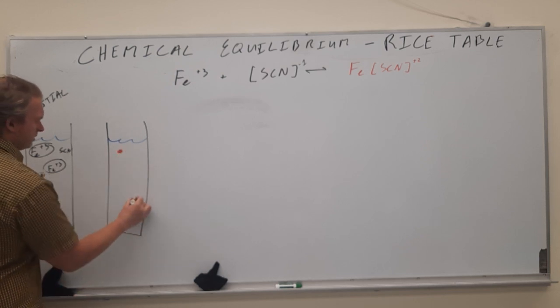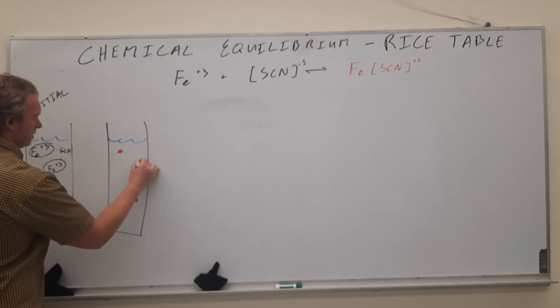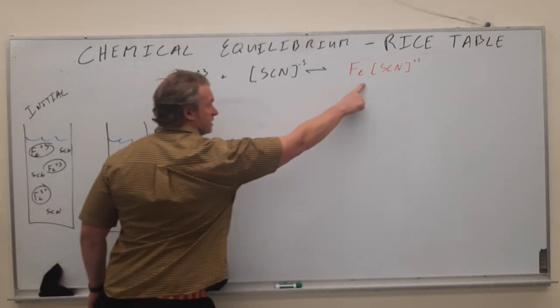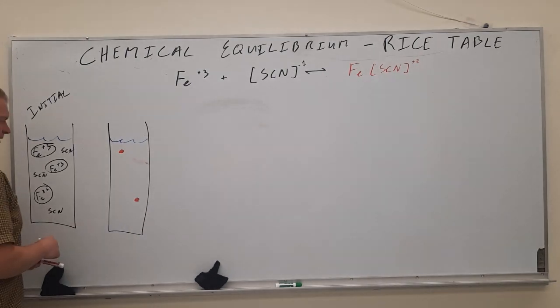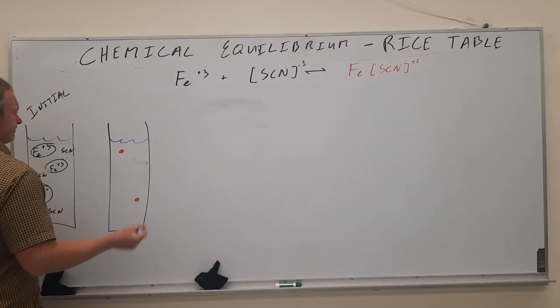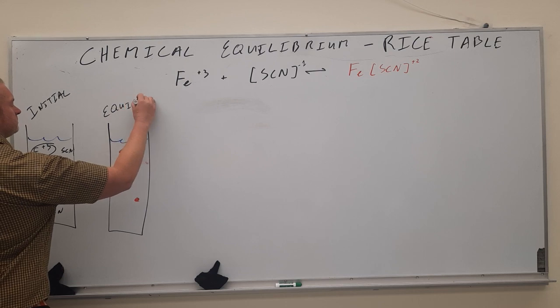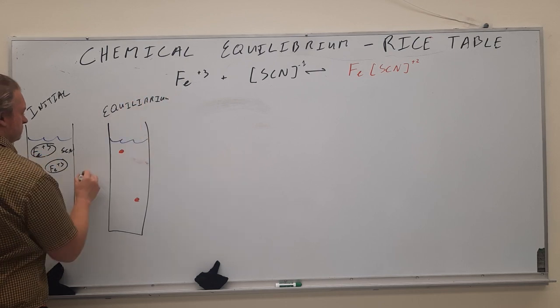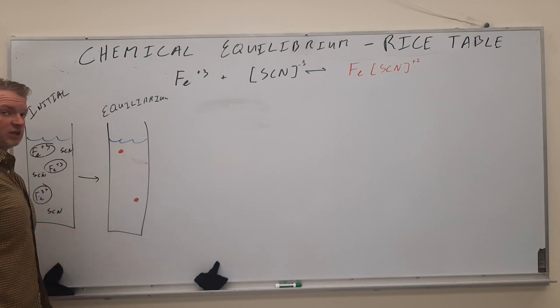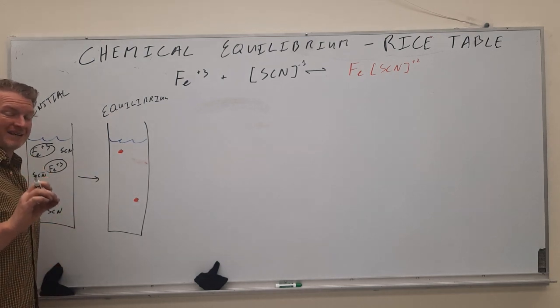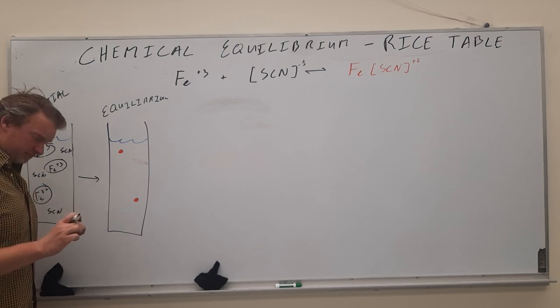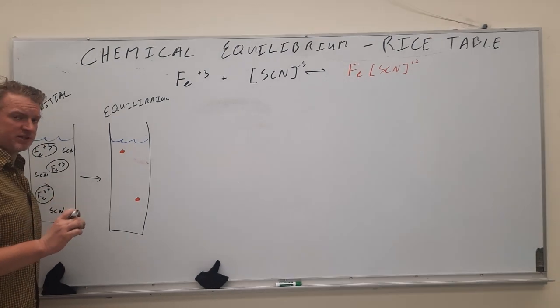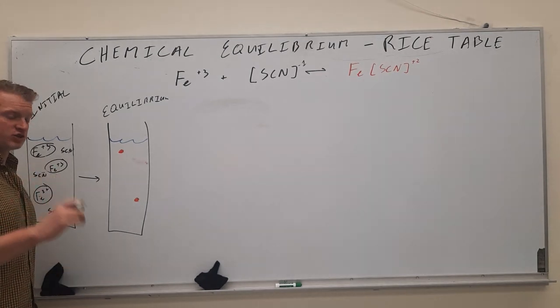You will have some of this compound produced, so I'm just using red dots to kind of make that up, to represent that there. But we also know at equilibrium, that at chemical equilibrium, it is a dynamic environment, and there are reactants and products, there are still reactants present, just in a smaller concentration than they initially started with.